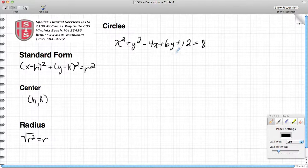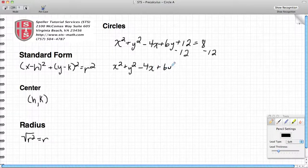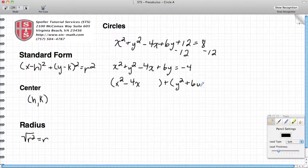First thing I want to do is go ahead and subtract 12 from both sides. When I do that, I end up with x squared plus y squared minus 4x plus 6y is equal to 8 minus 12, which leaves me with a negative 4. Now I have to use a method called completing the square, and I'm going to do that by first grouping my x's together, x squared and 4x, and then my y's together, y squared and positive 6y.